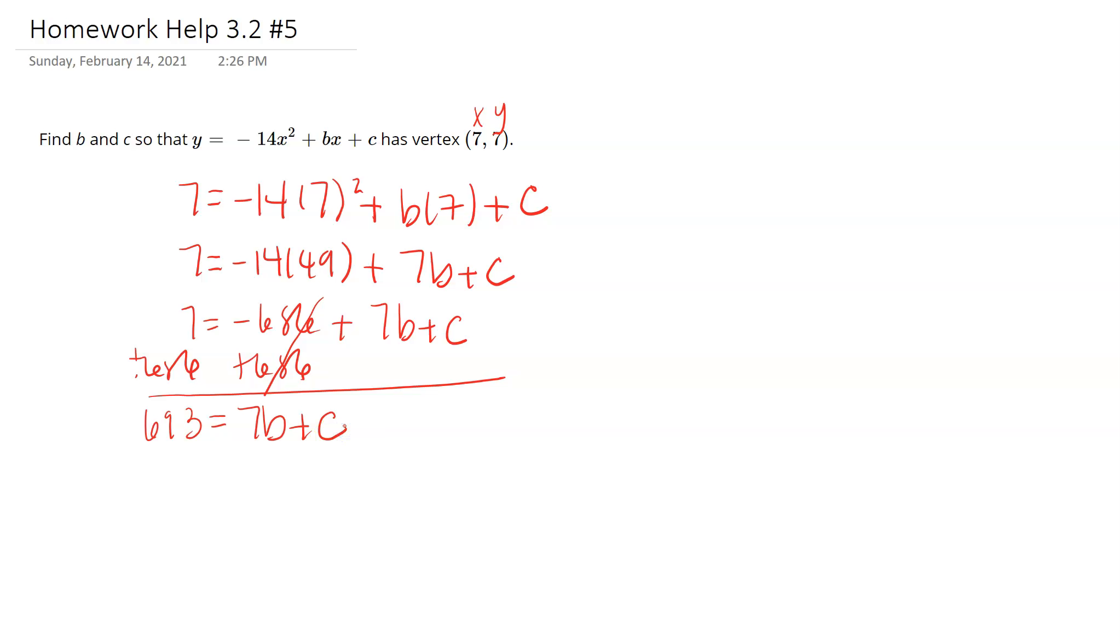Now that's pretty good that I can at least get it down to that. I just have two variables, but I'm going to have to do something else to figure out what b and c are. So let's also think about what is a vertex, because there's a reason they told you vertex and didn't just say it contained the point.